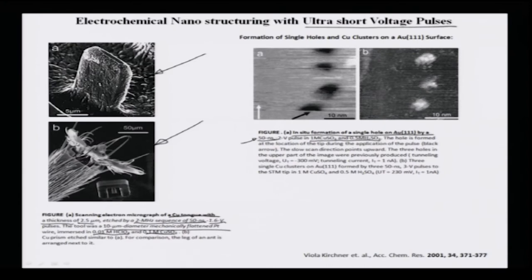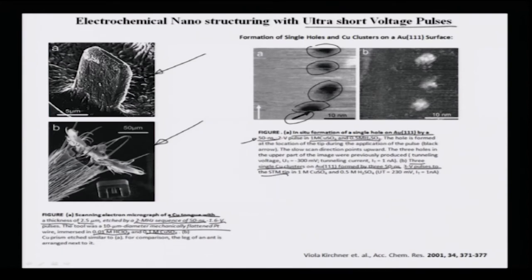The hole is formed at the location of the tip during pulse application, represented by the black arrow. The initiation of hole formation is shown in a schematic photograph. There are about 3 single copper clusters on gold formed by three 50 nanosecond, 3 volt pulses to the STM tip in the same electrolyte solution. Due to such a copper electrode formation, an inverted feature hole can be created. Importantly, this is being done at a resolution of 10 nanometers.